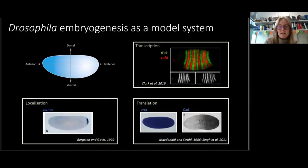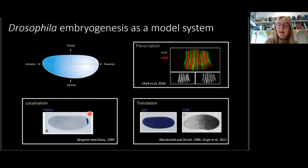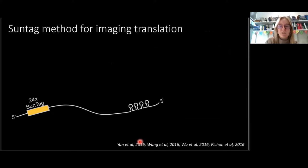Recent advances in technology like single molecule FISH and transcription live imaging using MS2 and MCP have allowed more detailed study of transcription and localisation of mRNAs. However, there was a lack of method to study translation in time and space at the resolution of single mRNAs in embryos. For my PhD project, we set out to apply the SunTag method for live imaging of translation in Drosophila embryos.